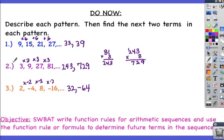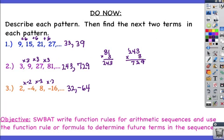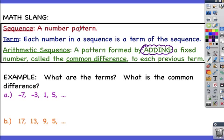However, numbers 2 and 3 are not examples of arithmetic sequences because we're multiplying a number. Because we are not adding a common difference, numbers 2 and 3 are not examples of arithmetic sequences.